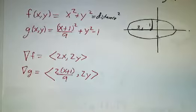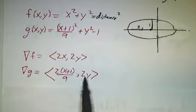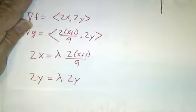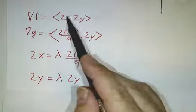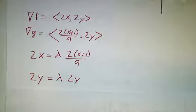So now we take our gradients. The gradient of f is just 2x, 2y. The gradient of g is twice x plus 1 over 9, 2y. And we set up our equations that 2x is lambda times twice x plus 1 over 9, and 2y is lambda times 2y.